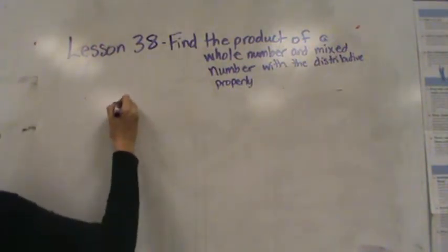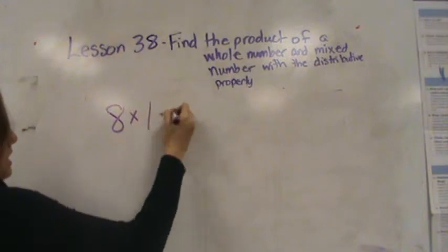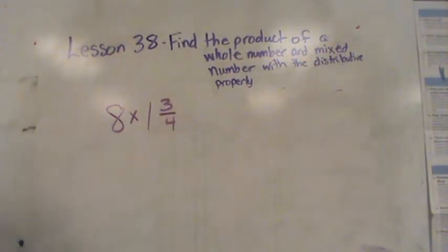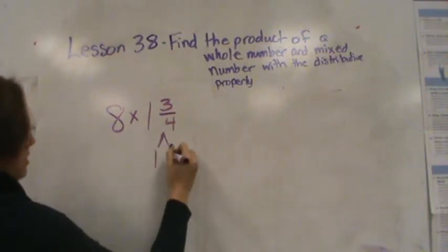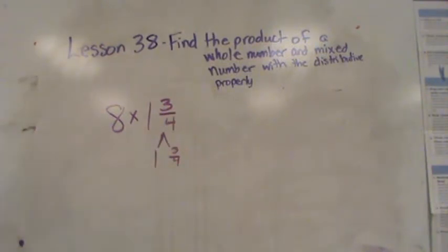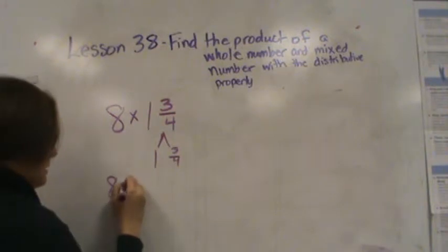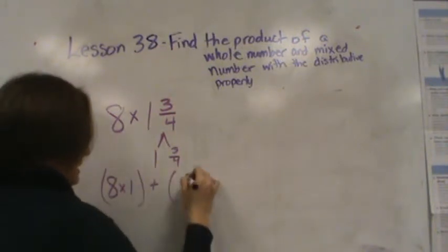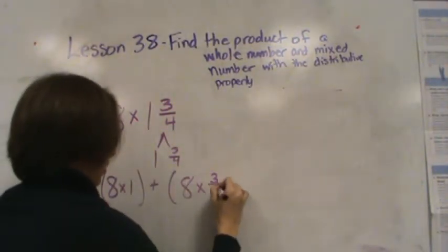So we have 8 times 1 and 3 fourths. Remember we're going to break up this fraction into a whole and then we're going to multiply. So I have 8 times 1 plus 8 times 3 fourths.